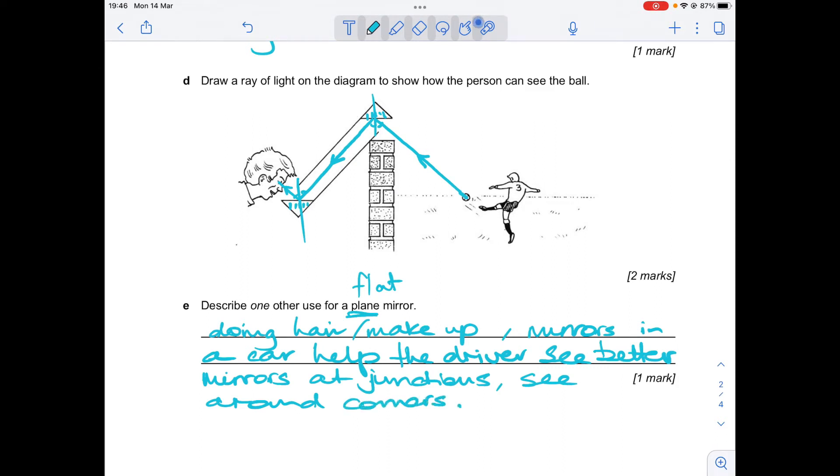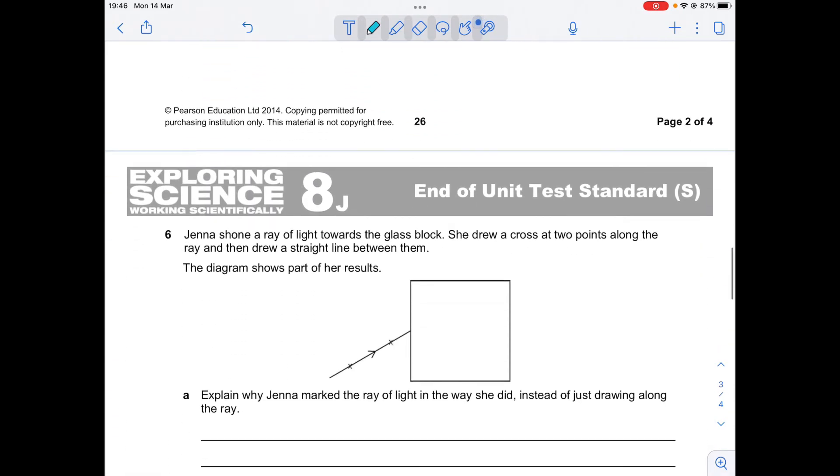Or you might have noticed in the drink section of Tesco's, they have a mirror in the corner so that the shop assistants can see who is hiding in the drink section. See around the corner. So any sensible suggestion. If you're not sure whether yours is a sensible suggestion, come and ask me and I will tell you.